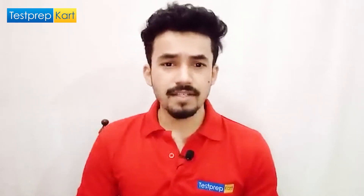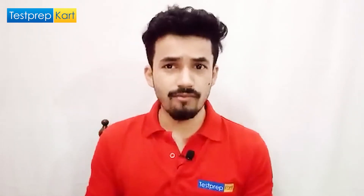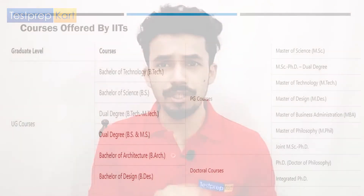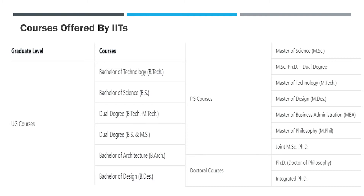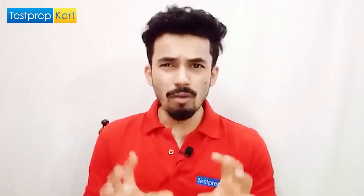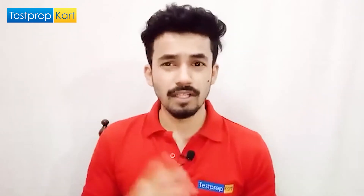The major courses offered by IITs include UG, PG, and doctoral programs. At the UG level: B.Tech, BS, dual degree (BS+MS and B.Tech+M.Tech), Bachelor of Architecture, and Bachelor of Design. At the PG level: M.Sc, M.Sc–Ph.D dual degree, M.Tech, M.Des, MBA, M.Phil, and joint M.Sc–Ph.D. Doctoral programs include Ph.D and integrated Ph.D.